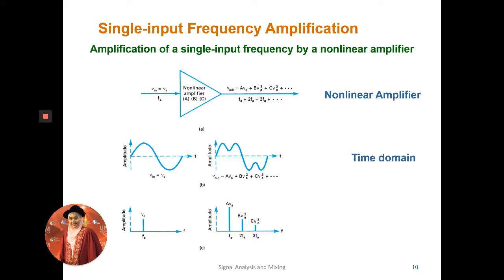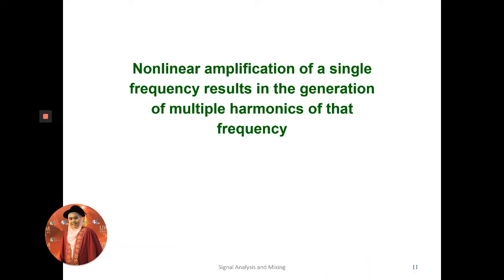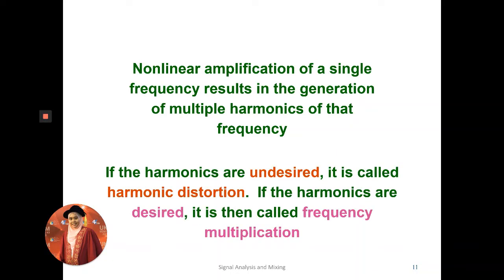Single-input non-linear amplification produces what we call harmonics — additional frequencies generated by the mixing process inside the non-linear amplifier. If we want these harmonics in our system, the process is called frequency multiplication. If we do not want the harmonics, they become interference and are called harmonic distortion.